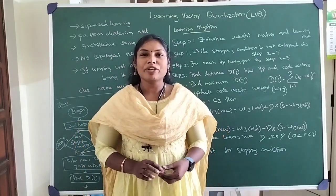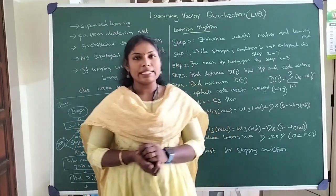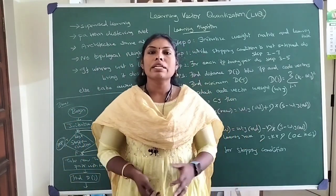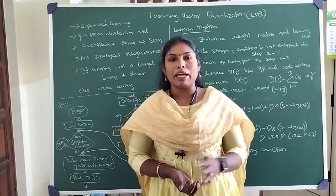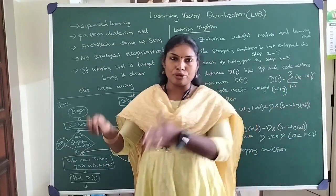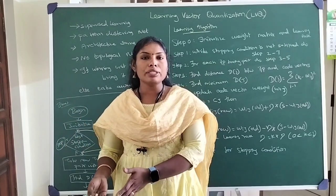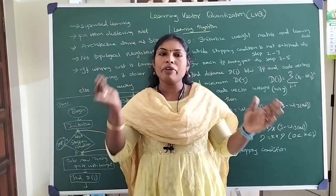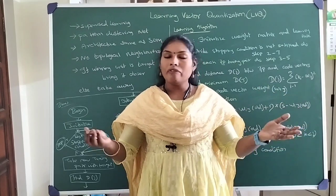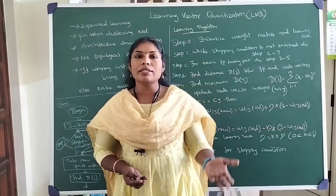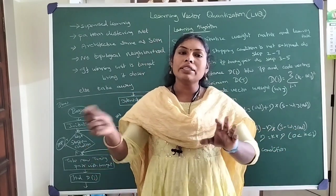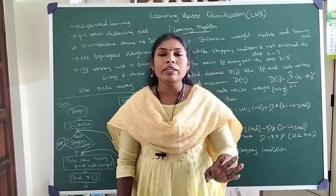Hello everyone. In today's session we are going to discuss about Learning Vector Quantization. Learning Vector Quantization is a kind of network that is similar to self-organizing maps. You will have a set of cluster units, a set of input neurons, and you are going to find the distance between the input pattern and the cluster units. We may use either Euclidean distance or Manhattan distance, and with that we will be selecting one winning unit.